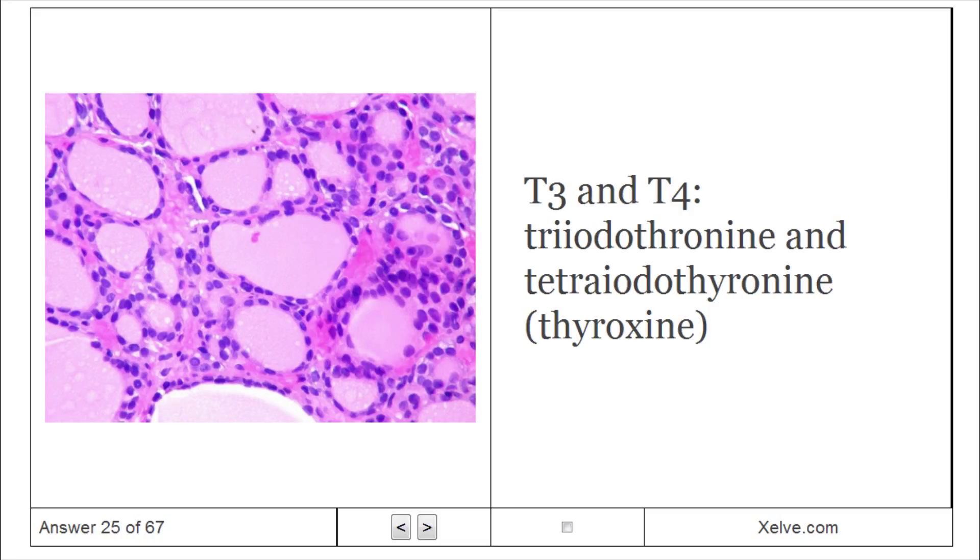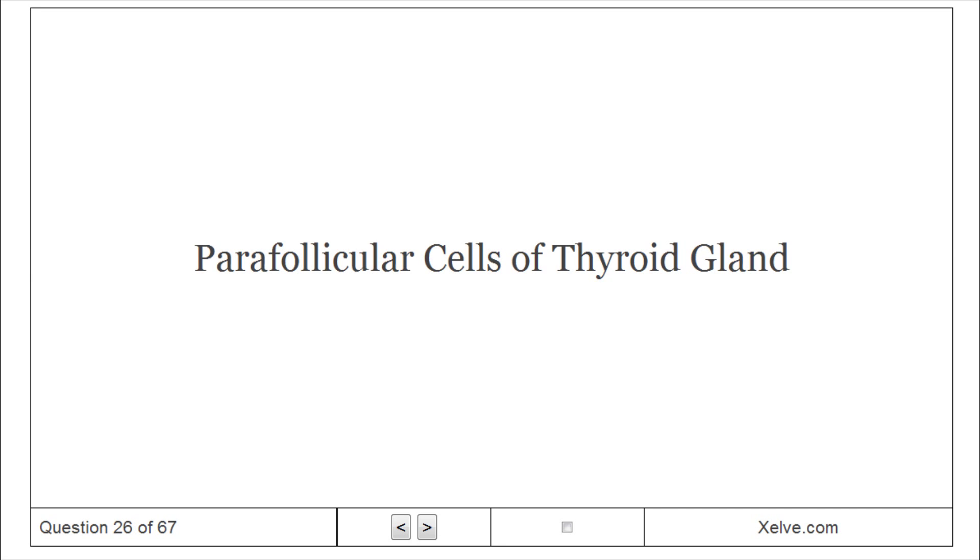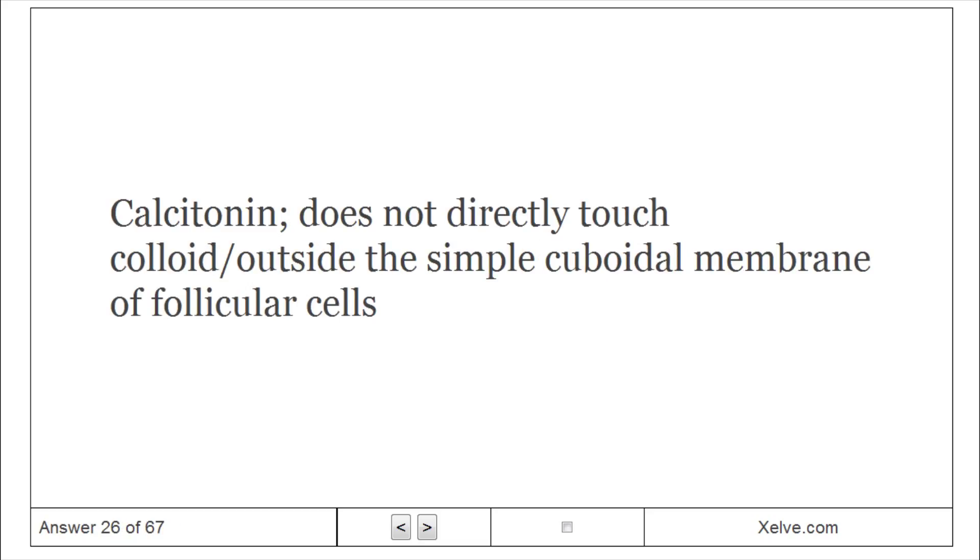Parafollicular cells of thyroid gland produce calcitonin. Does not directly touch colloid, located outside the simple cuboidal membrane of follicular cells.